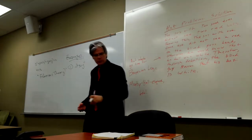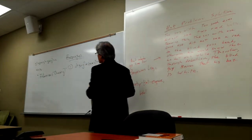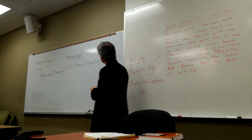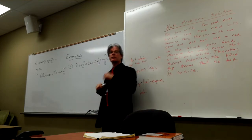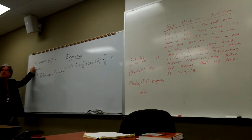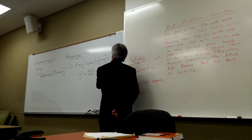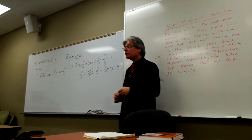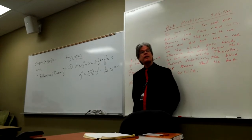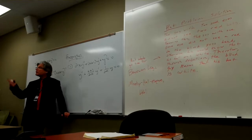How about 2X times Y double prime, plus (X plus 1) times Y prime, plus Y equals zero? I think X equals zero is a singular point. Because if I alternatively rewrite this as Y double prime plus (X plus 1)/(2X) times Y prime plus (1/(2X)) times Y equals zero, then both P and Q are not analytic about X equals zero. So zero really is a singular point — in fact, a regular singular point, because X occurs in the denominator at most once in P and at most twice in Q.